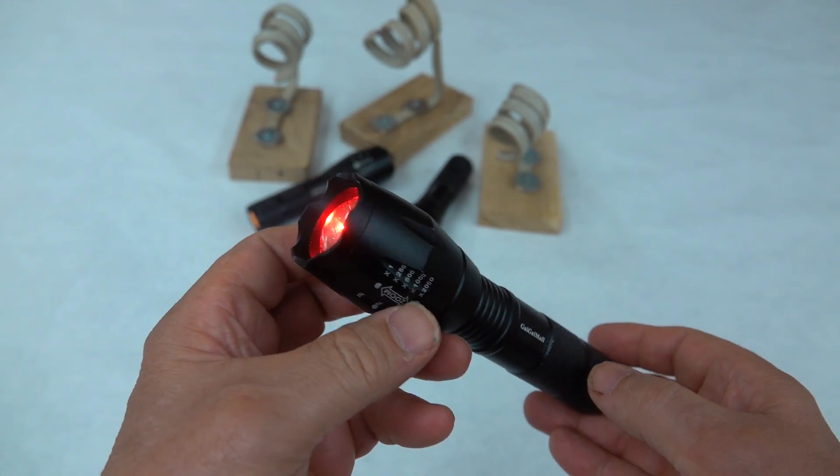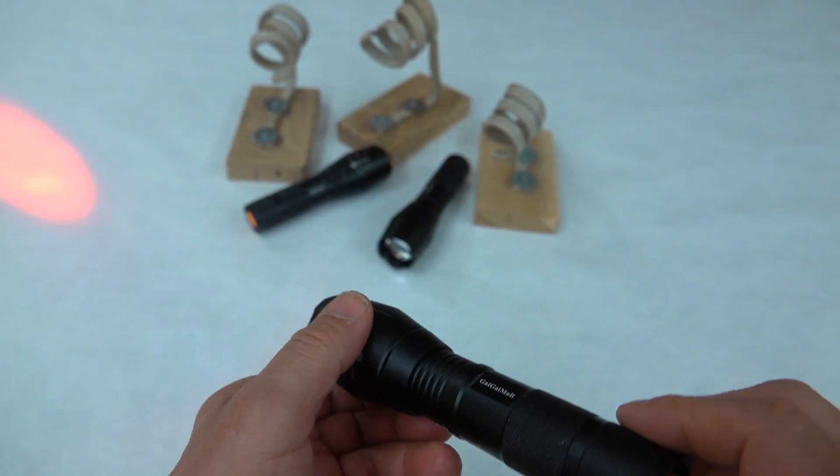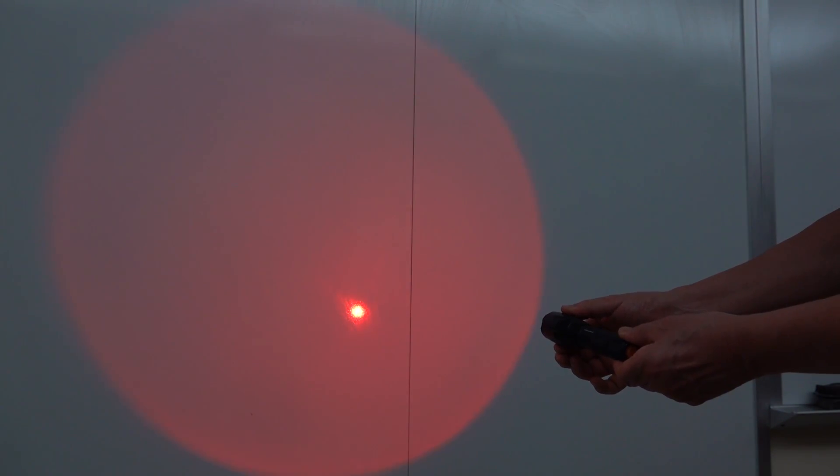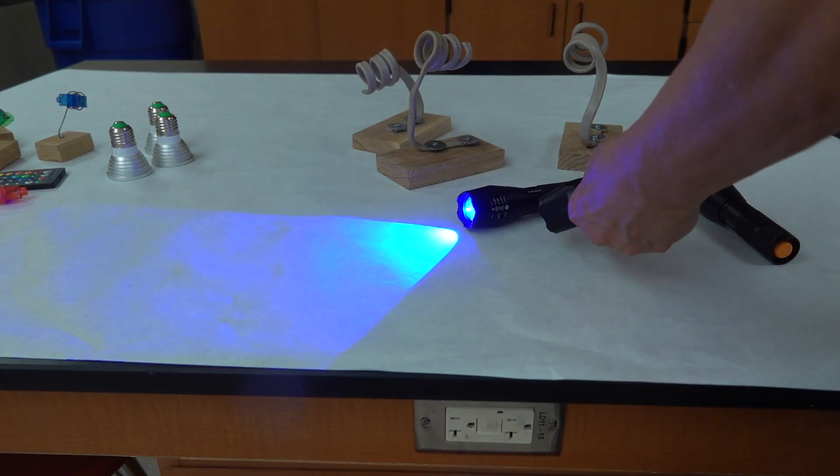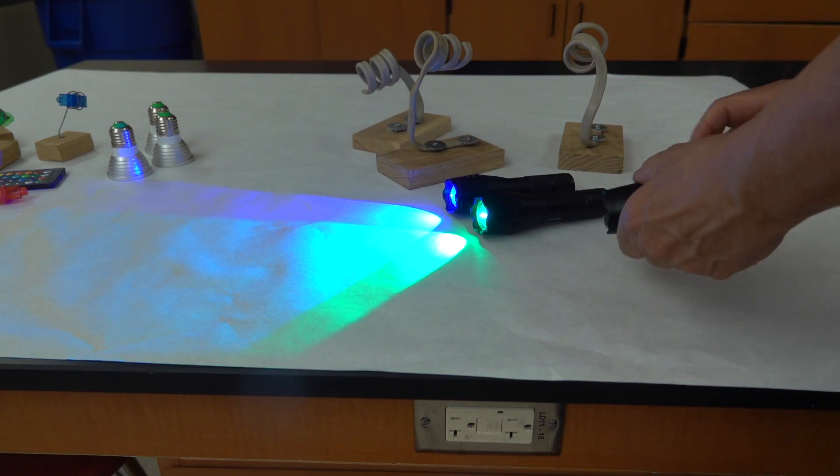The LED flashlights operate on three AA batteries. They're adjustable from a very fine point to a very large pattern and they come in three colors: blue, green, and red.